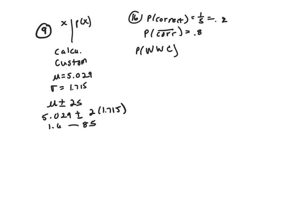So probability, the key word here is and. And means multiply. Probability of wrong is 0.8. And the next one being wrong is 0.8. And the next one being correct is 0.2. You multiply those together and I got 0.128.